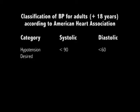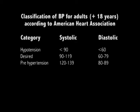Desirable blood pressure is 90 to 119 for systolic and 60 to 79 for diastolic. Then we have a slightly higher category called pre-hypertension, where systolic pressure runs between 120 to 139 and diastolic between 80 to 89. Then we come to hypertension stage one.